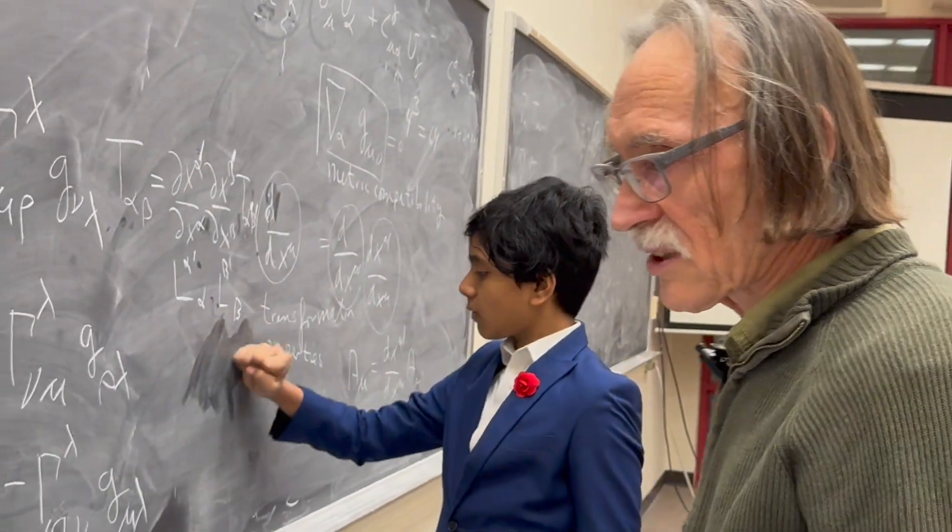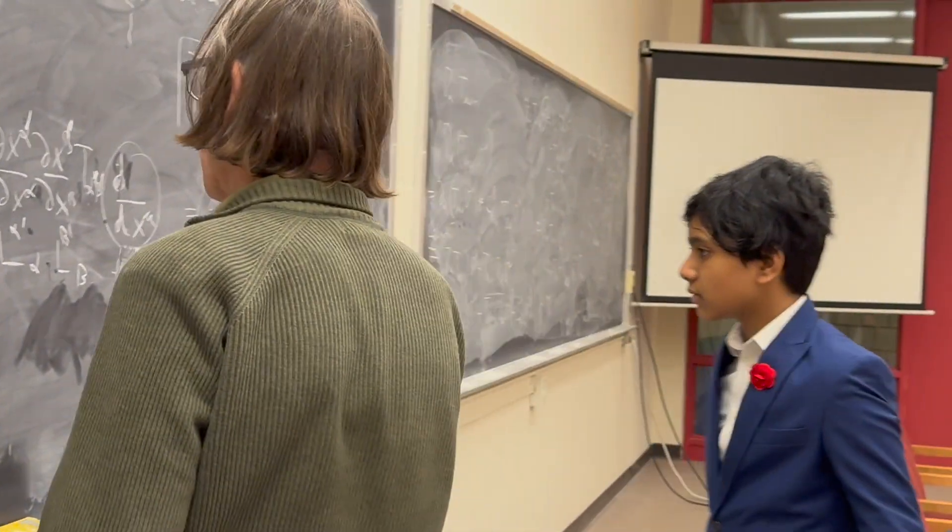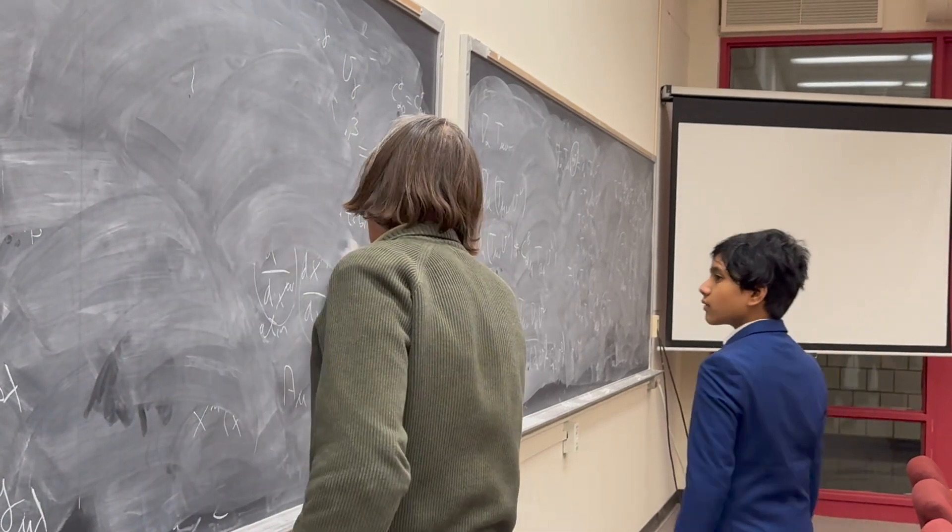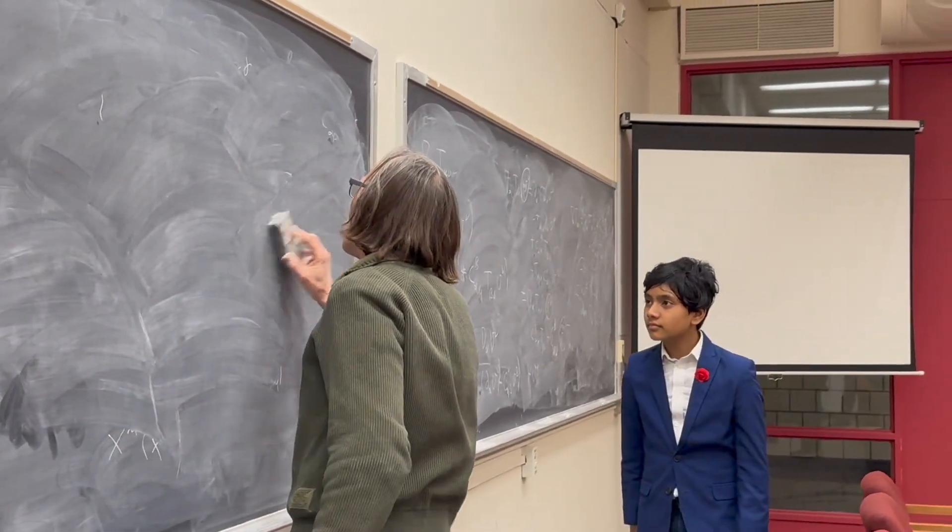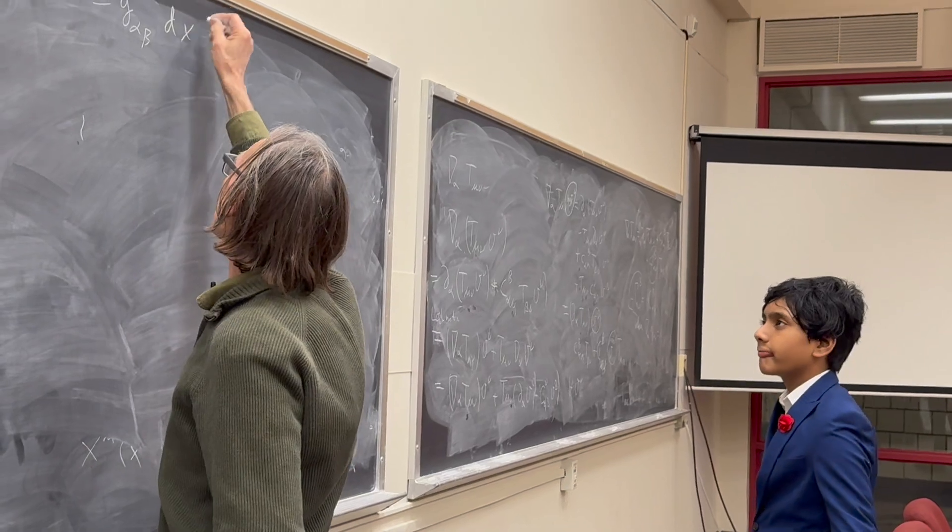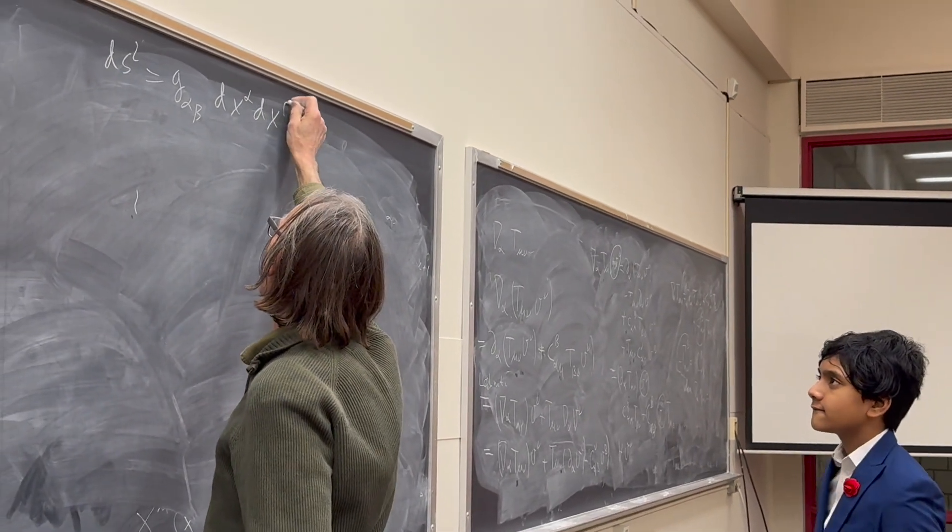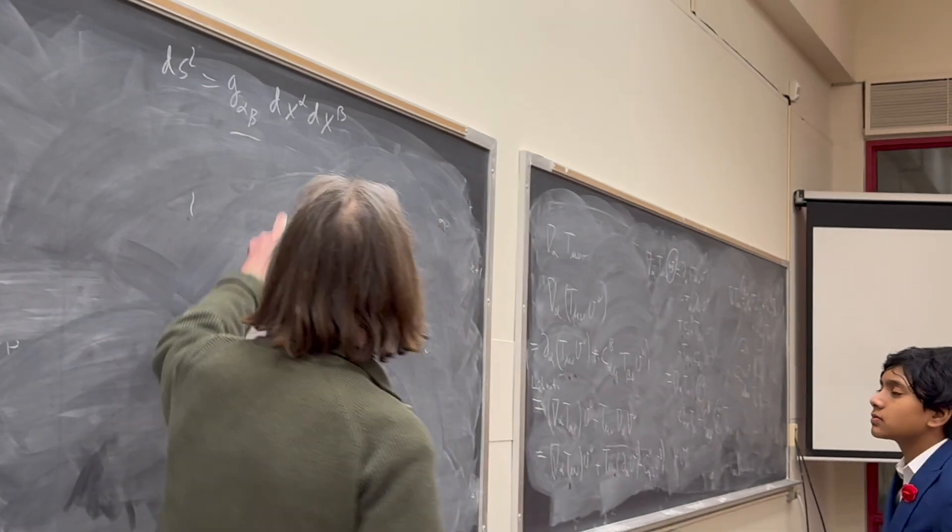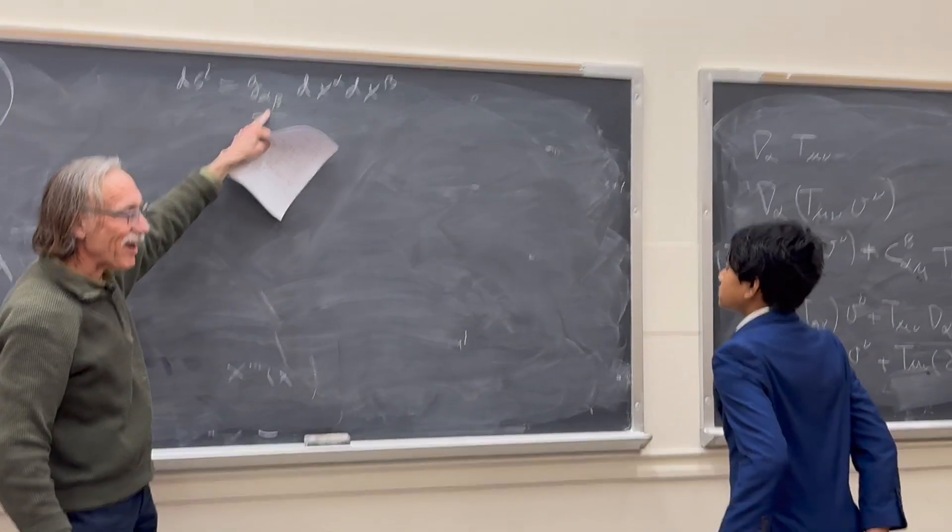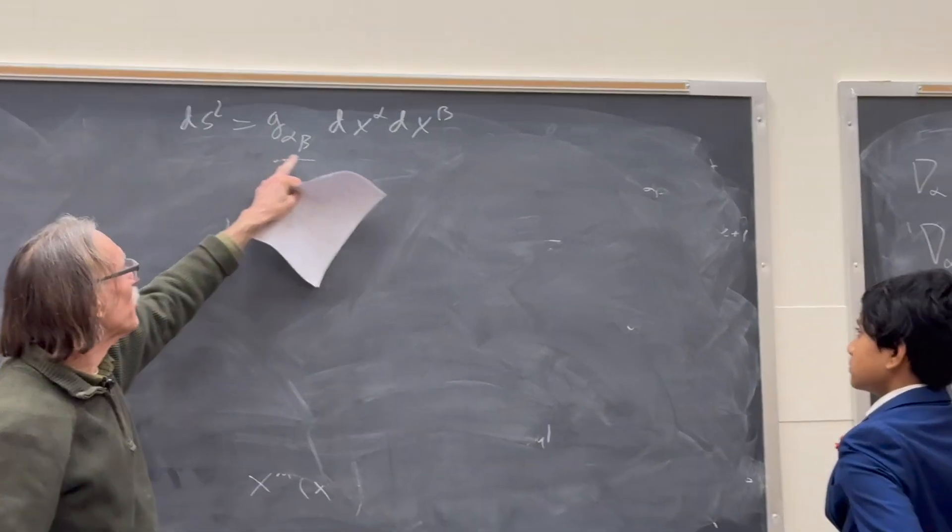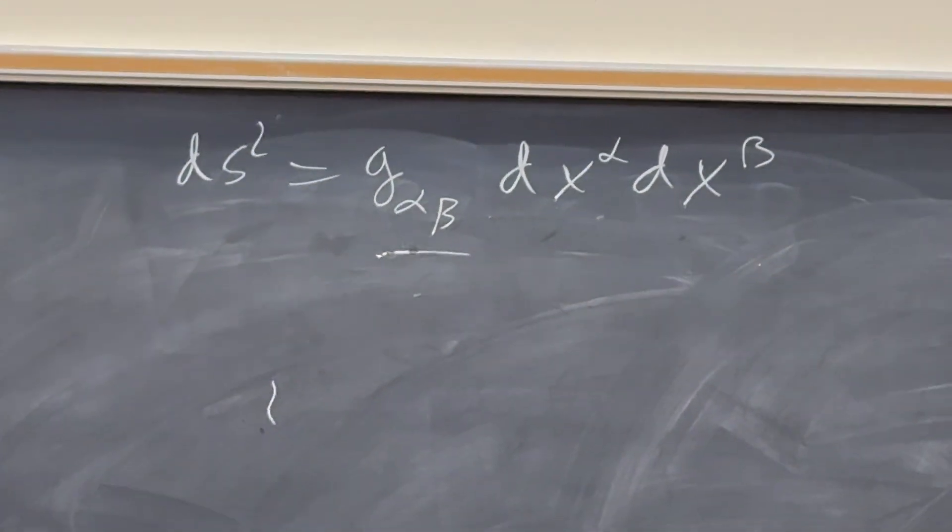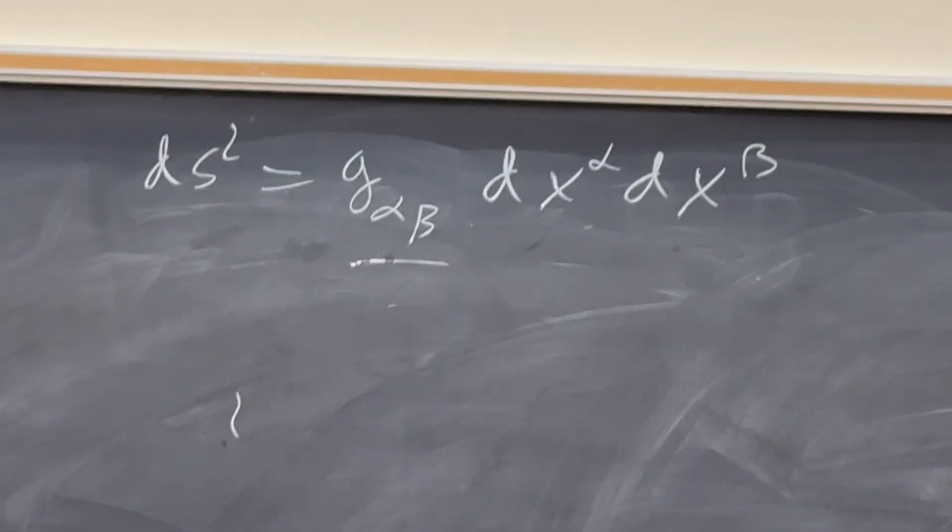So now what you can do is, the reason it's symmetric is that the metric tensor comes into the metric. And so you have that ds² is equal to G_αβ dx^α dx^β. So this is symmetric under the interchange of alpha and beta. That means that this must be symmetric. Because if it would have an anti-symmetric part, it would become zero after summation. You understand that? Okay.